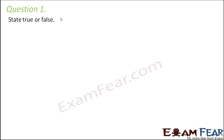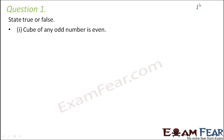Question 1: State true or false — cube of any odd number is even. That is absolutely false, because if you look at any odd number: 1 cubed is 1 (odd), 3 cubed is 27 (odd), 5 cubed is 125 (odd). So cube of any odd number is always odd. This is definitely false.